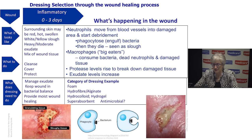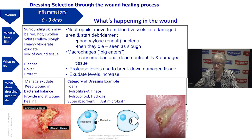When the neutrophil dies, we see it on the wound as slough. Slough is what you see on the bottom right-hand picture — that yellow, white, custard-like consistency we often see on wounds. It's actually a good sign because it means the white blood cells are working and the wound is being cleansed, which is exactly what we want to happen at this point.